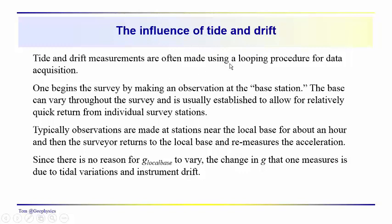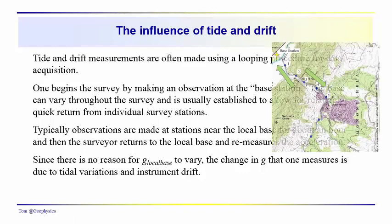The most common way of doing this is to use a looping survey approach. You begin your survey by making observations at a base station. Base stations can be set up periodically as you go through your survey. The idea is that the base station probably shouldn't be more than an hour or so away from your last survey point, so that you can get out, measure a few stations, and then back to your base station within about an hour's time.